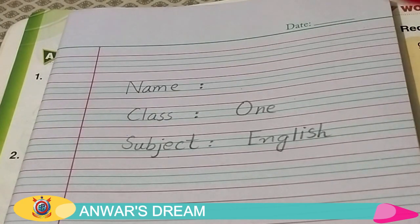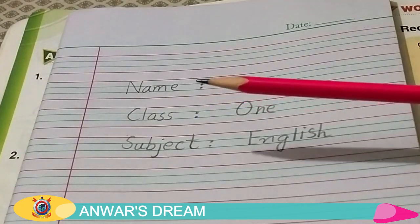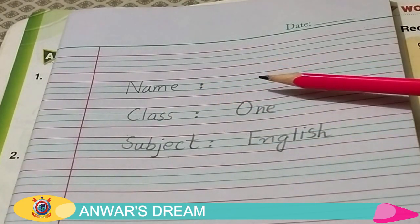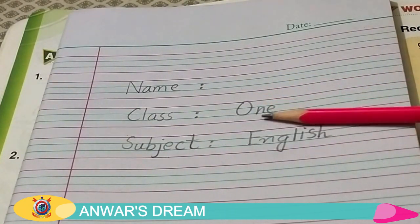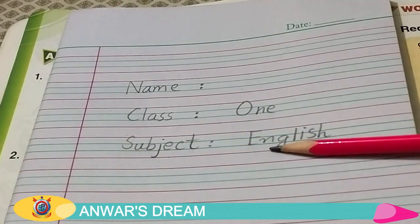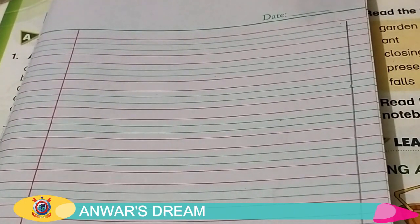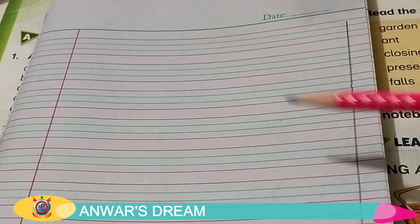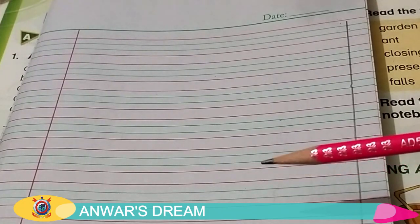Ok students, this is your notebook. This is a four-line notebook, and on the first page you will mention your name. You have to write down your name, your class — Class 1 — and your subject, which is English. Now let's move towards the next page. After writing your name, let's start. We will write the date, day, margin lines, and question answers.